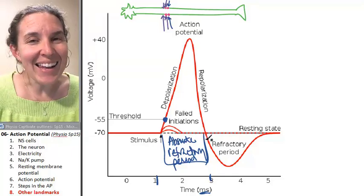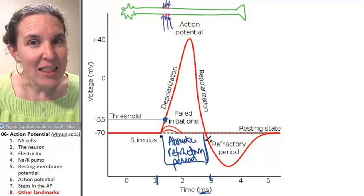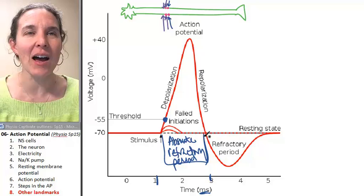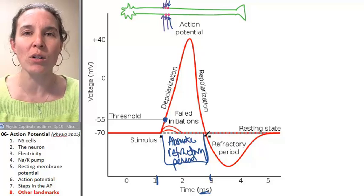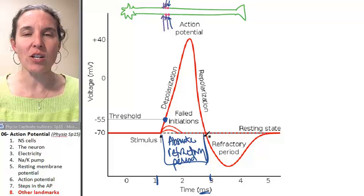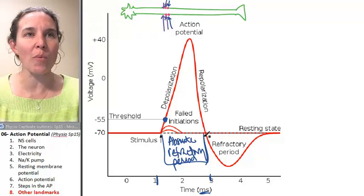And that actually prevents the action potential from moving two directions at once. Now, that's a little bit, I would love to have some kind of visual or activity that we could do where we acted that out so that I could try and visualize why is that the case that it won't go backwards?